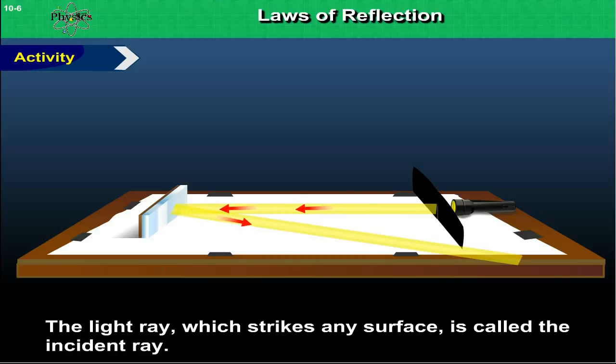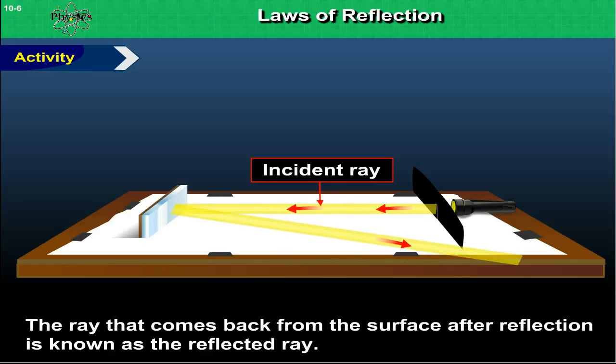The light ray which strikes any surface is called the incident ray. The ray that comes back from the surface after reflection is known as the reflected ray.